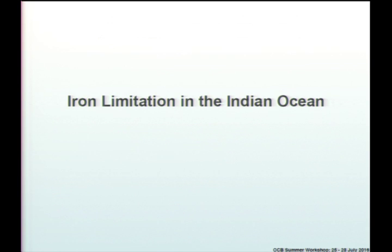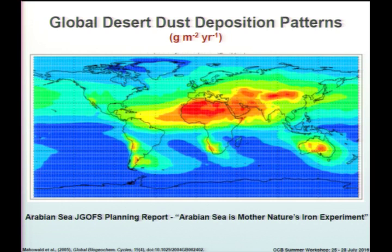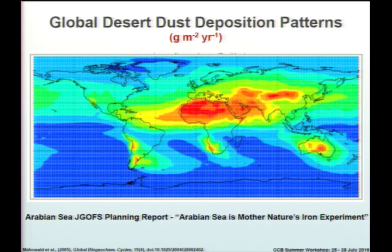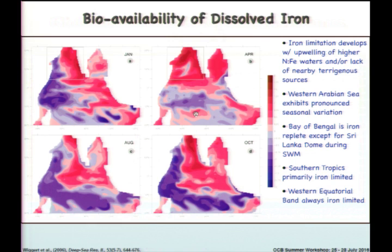As Jim mentioned, around the time of the JGOFS synthesis and modeling SMP program, I was working on an Indian Ocean model that had iron as one of the explicit components. This is the quote Jim referenced from Sharon Smith. If you look at this map — a global dust deposition pattern produced by Natalie Mahowald — why would anyone ever expect iron limitation to set up in the Arabian Sea? It's like, that's crazy talk. This is from one of the planning reports for the Arabian Sea JGOFS.